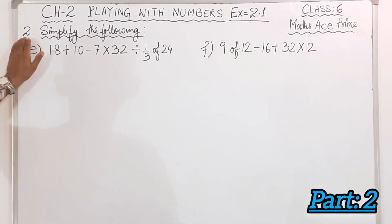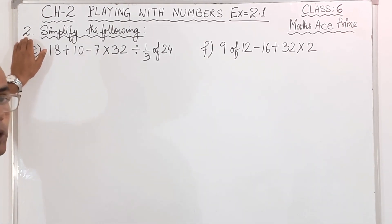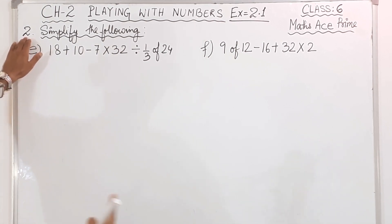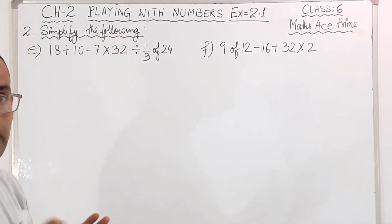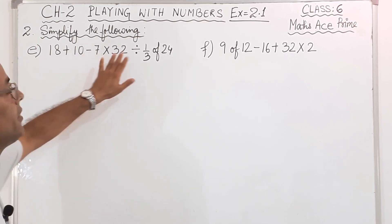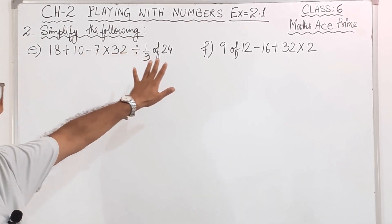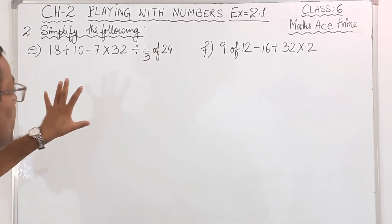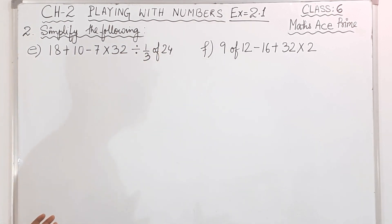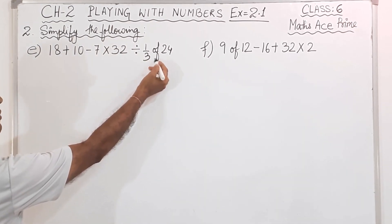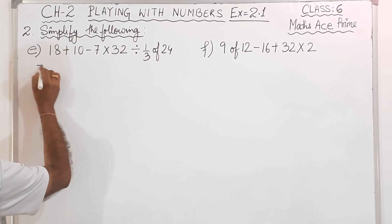So let us solve question number 2. We were going on solving this sum — we did up to D. Now question number E: 18 plus 10 minus 7 into 32 divided by 1/3 of 24. Now here BODMAS rule we have to follow. Bracket is not there, after that 'of', so 'of' is here. So we will do this part first.